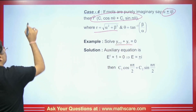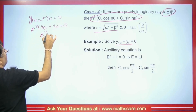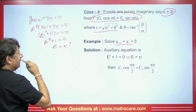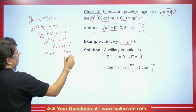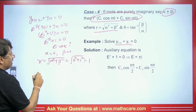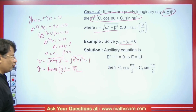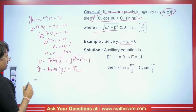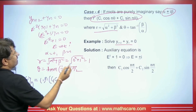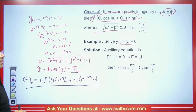For example: yn+2 + yn = 0. This will be E²·yn + yn = 0, so (E² + 1)·yn = 0, giving E² + 1 = 0, so E = ±iota. Here alpha = 0 and beta = 1. We find r = sqrt(0² + 1²) = 1. We calculate theta = tan⁻¹(1/0) = tan⁻¹(infinity) = pi/2. So the CF will be yn = 1^n · [C1·cos(n·pi/2) + C2·sin(n·pi/2)]. This is what we get.